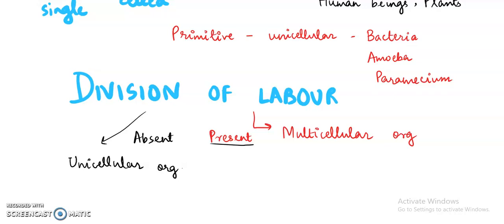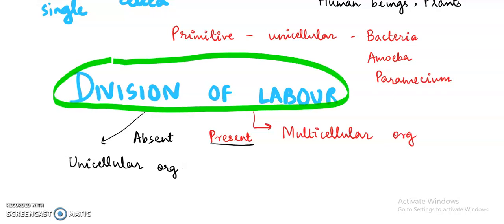Whereas in multicellular organisms, we have seen in the previous video that organs, tissues, and cells are specific for specific organ systems. This is known as division of labor. So division of labor means the division of work. It is absent in the case of unicellular organisms but it is present in the case of multicellular organisms.